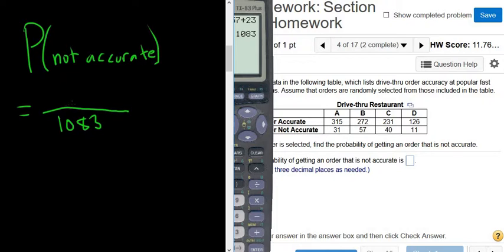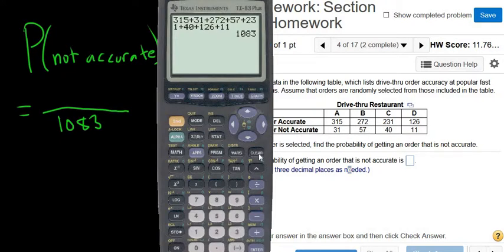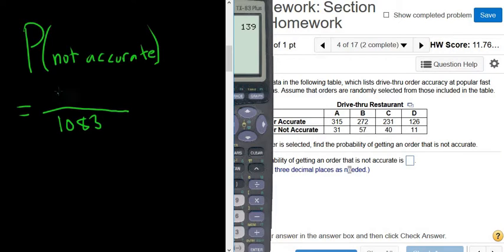On the bottom it's the number of ways to get an order, which is the total. On the top it's the number of ways to get an order that is not accurate. To figure that out, we add up all of the orders that are not accurate, which is the bottom row. That would be 31 plus 57 plus 40 plus 11. So 139. There's 139 ways to get an order that is not accurate.